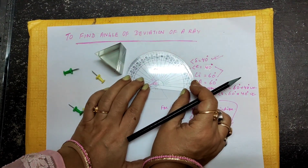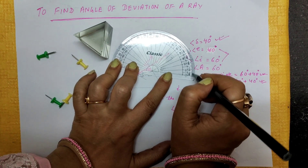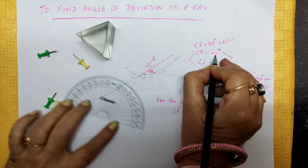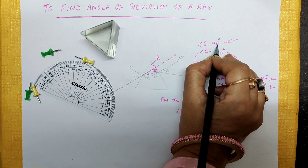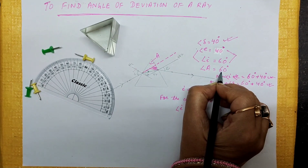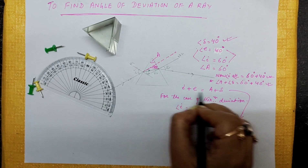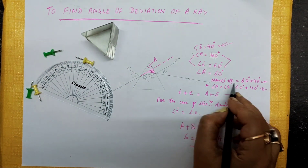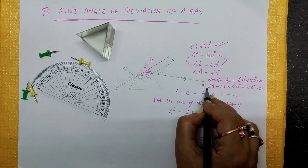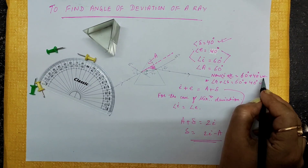Now, the measurement of the angle of emergence. Keeping the protractor here — you can see the measurement: 10, 20, 30, 40 — so the angle of emergence is 40 degrees. We have measured the angle of deviation as 40 degrees, angle of emergence as 40 degrees, and angle of incidence was taken as 60 degrees. The angle of prism was 60 degrees. We know that I + E = A + delta. We can see this condition is satisfied perfectly: angle I + angle E = 60° + 40° = 100°, and angle A + angle delta = 60° + 40° = 100°. So our experiment is perfectly fine.